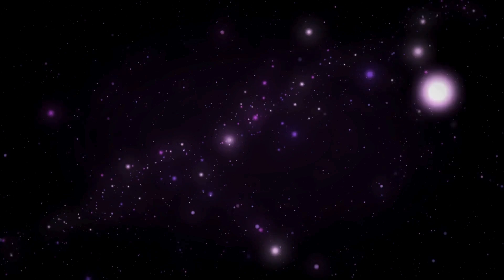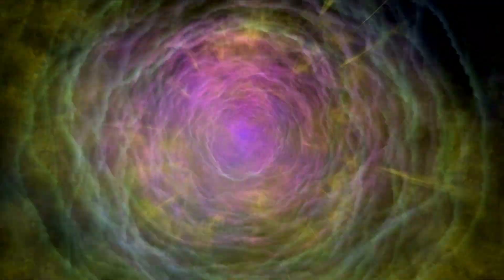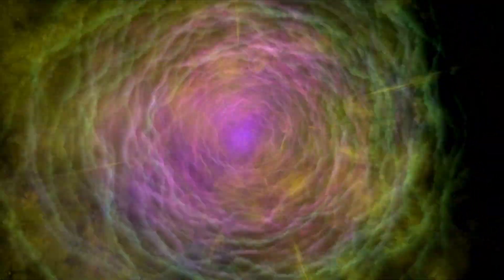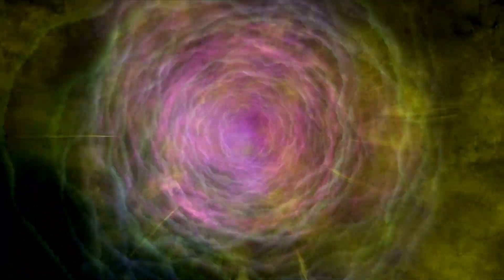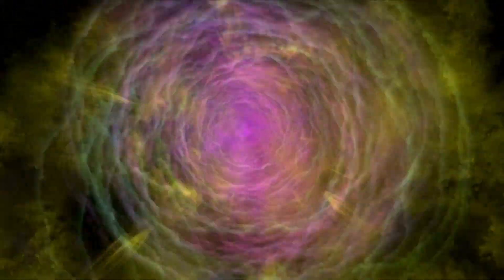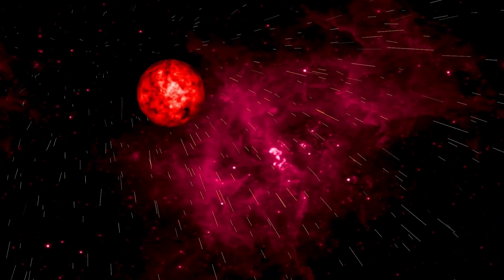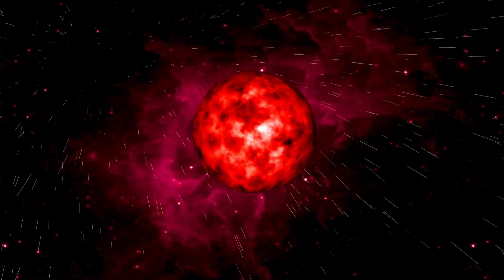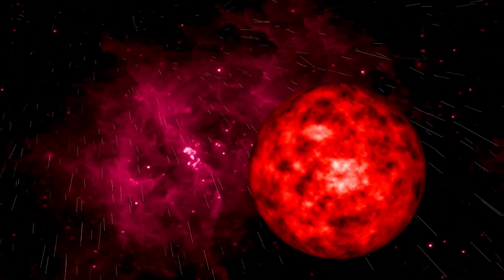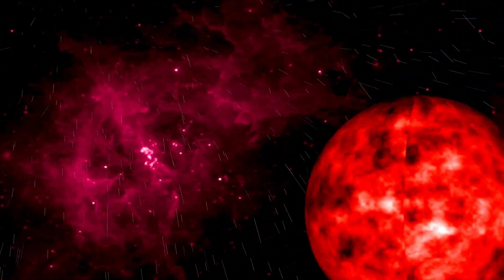This radiation often appears as X-rays and gamma rays, which can have wide-ranging effects. One of the most significant dangers posed by this high-energy radiation is its ability to catalyze the depletion of oxygen from the ozone layer, which shields our planet from harmful solar radiation. Without a healthy ozone layer, life on Earth's surface would be exposed to extreme ultraviolet radiation from the sun, potentially leading to mass extinction events.